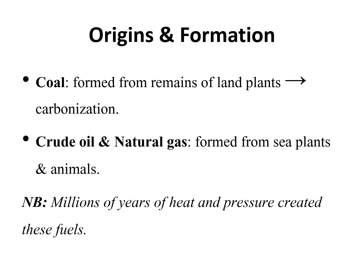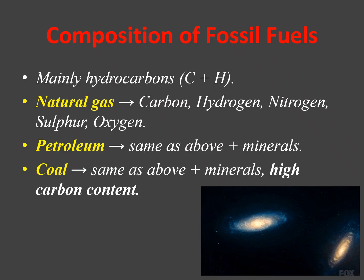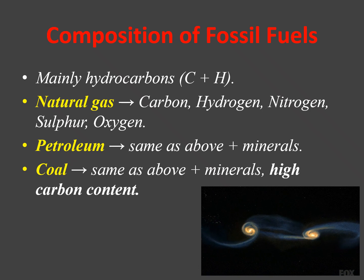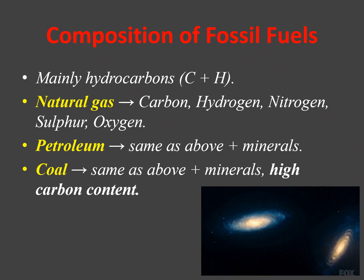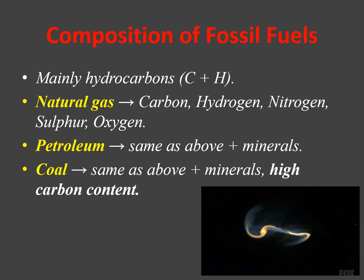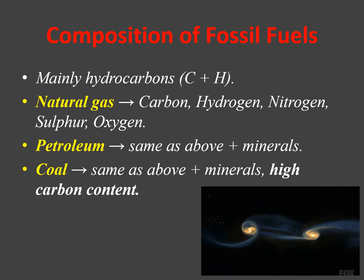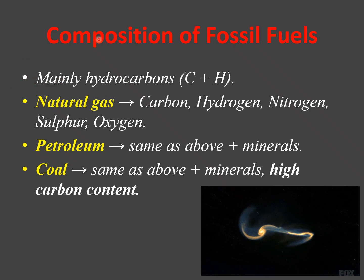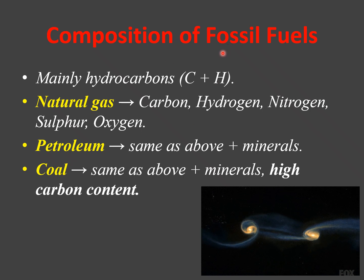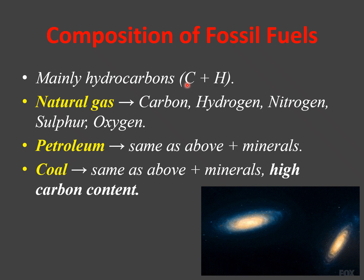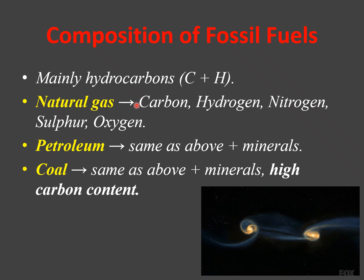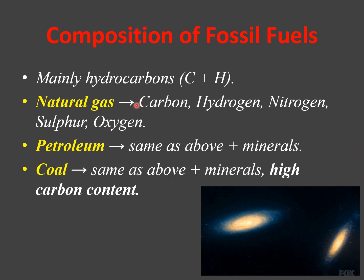Let's look at the composition of fossil fuels. The composition of different substances is key — we need to know what each substance comprises. We have three types of fossil fuels and we'll see what each one contains. Mainly all fossil fuels are hydrocarbons, and a hydrocarbon is a substance which consists mainly of carbon and hydrogen. All of them have carbon and hydrogen because they are hydrocarbons.